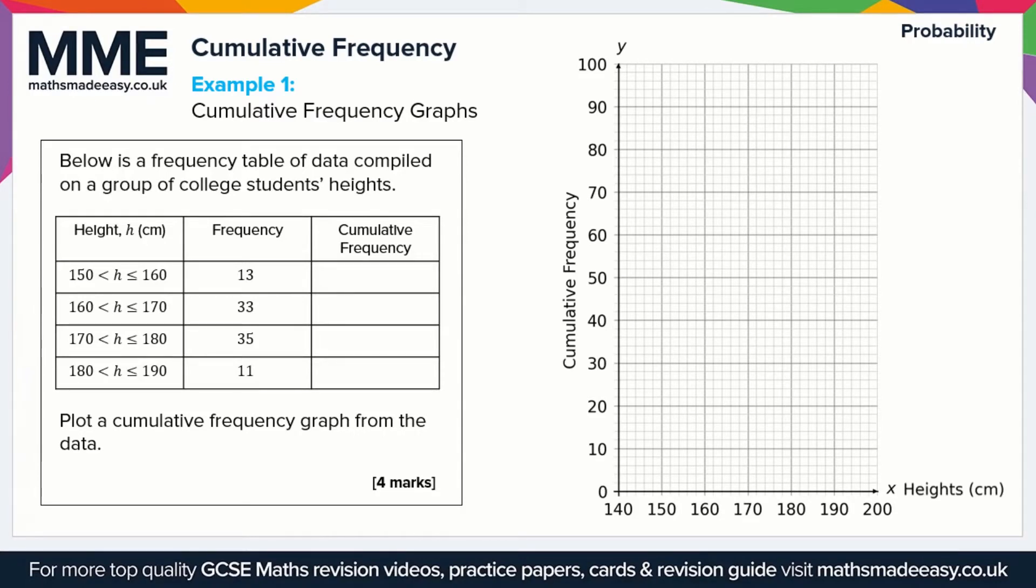The way we're going to do that is first of all tally up the cumulative frequency for each of these height intervals. For the first one here, we have a frequency of 13, and because it's the first class, the cumulative frequency, which is a measure of the frequency so far, is just 13.